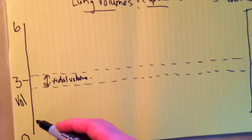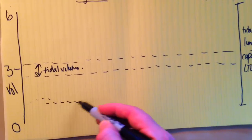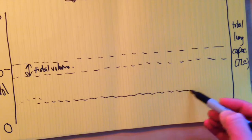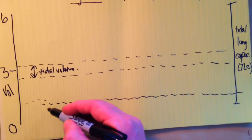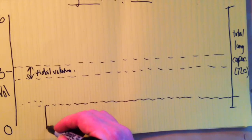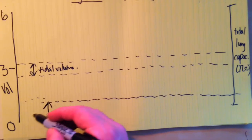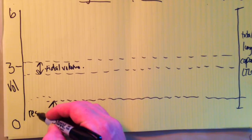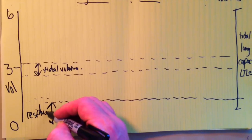We also know that there's an amount of air that stays in the lungs no matter what you do. So you can breathe out as hard as you can and you can't get rid of it. And that's called the residual volume.